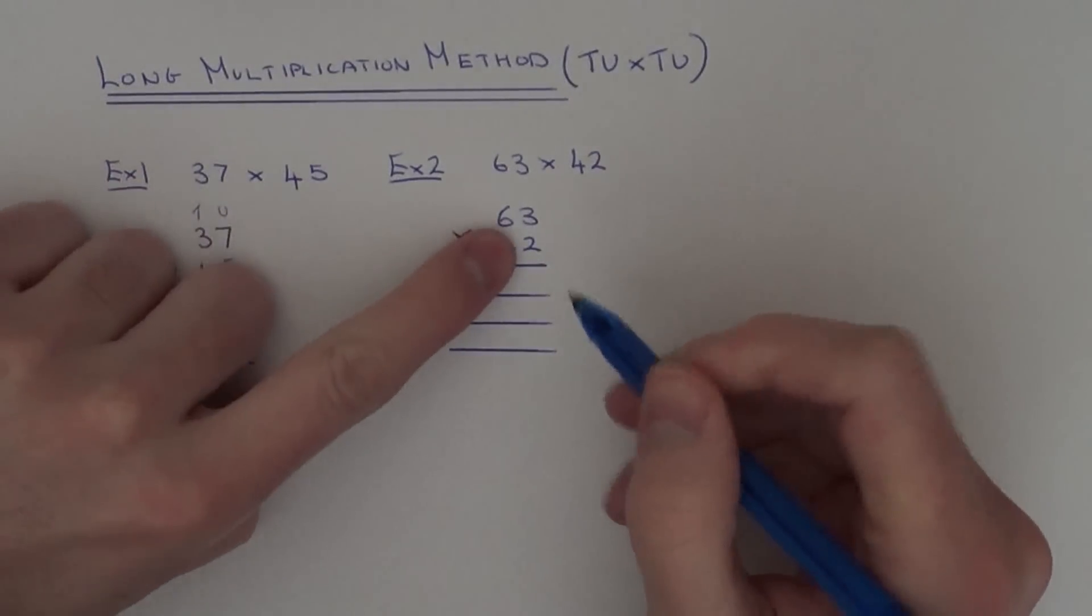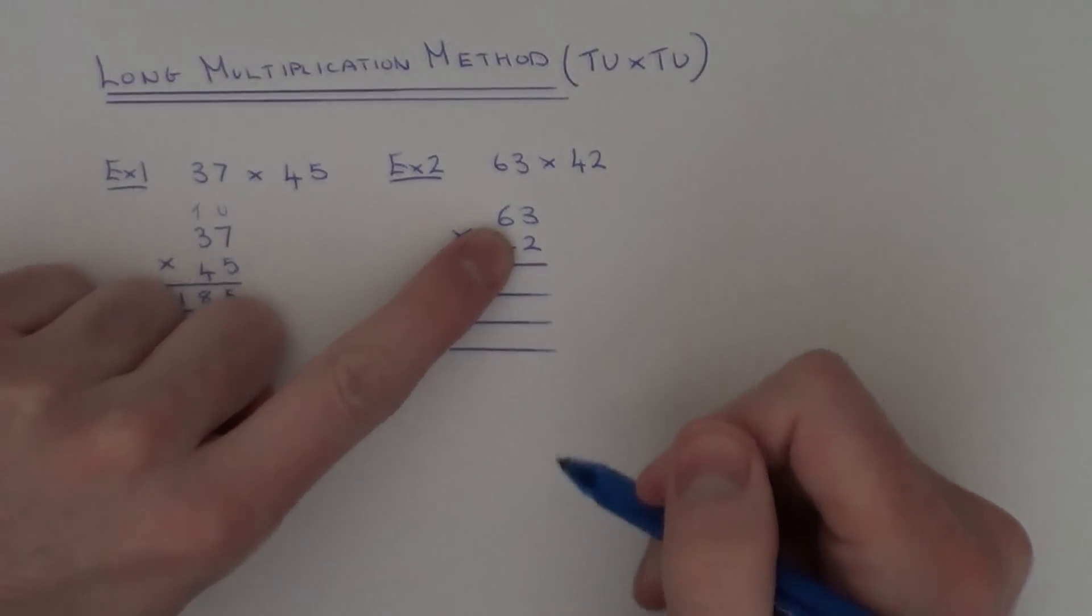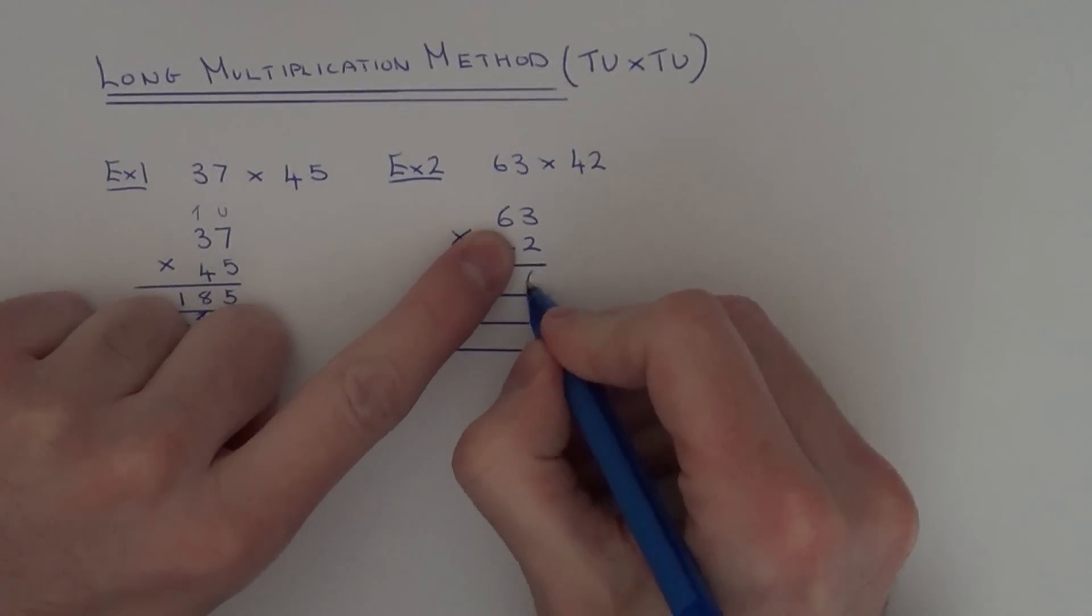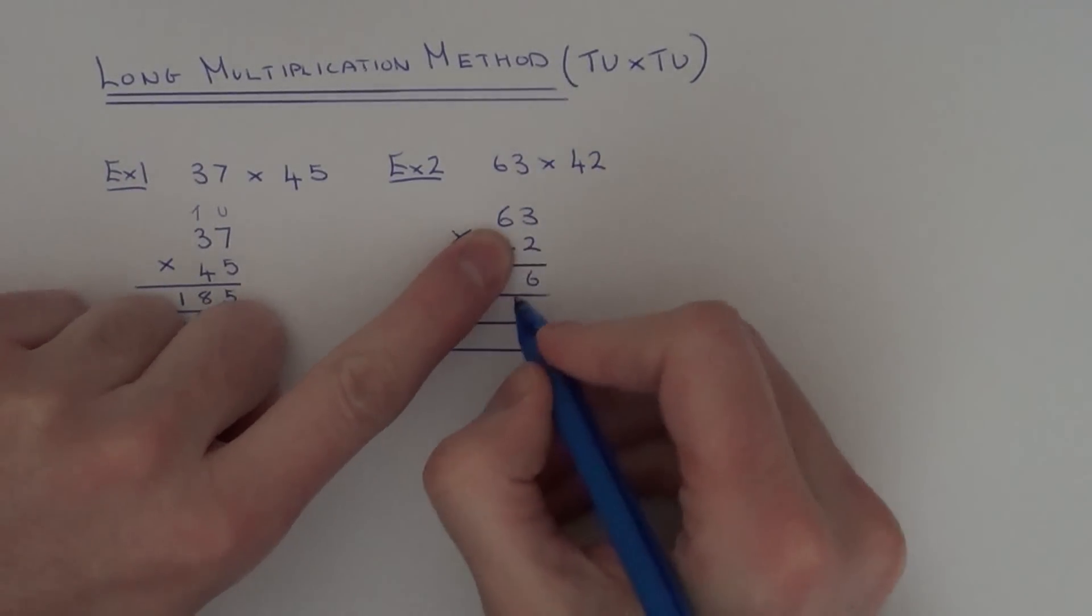So on the first line we're working out 63 times 2. So 3 times 2 is 6, and 6 times 2 is 12.